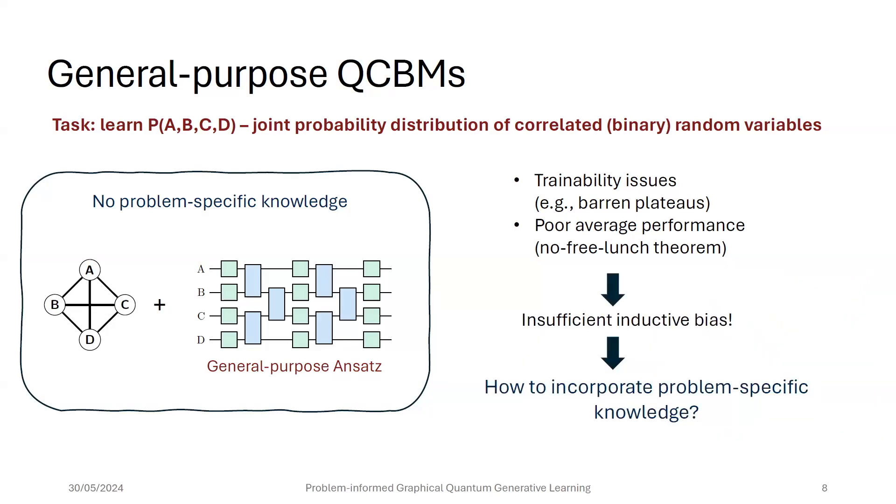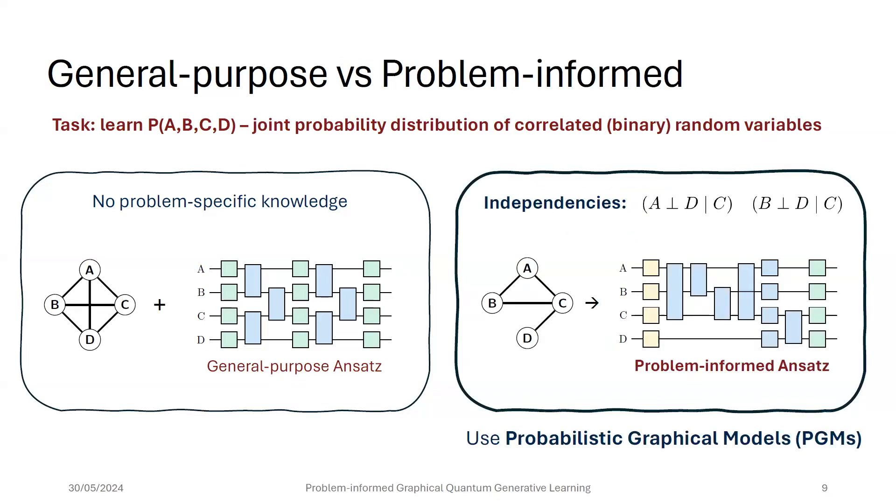So what we can do is see this as a lack of sufficient inductive bias that is encoded into the quantum circuit, into the ansatz. Now, the question is how we can incorporate problem-specific knowledge in these very general distribution learning tasks. And we answer this question by using probabilistic graphical models, so if we know some independence relations or conditional independence relations between our random variables that we can represent as a graph, we use that graph to encode this problem-specific knowledge into the ansatz, into the quantum circuit.